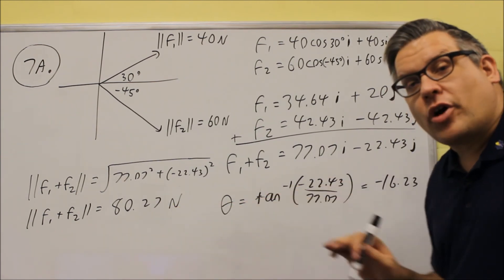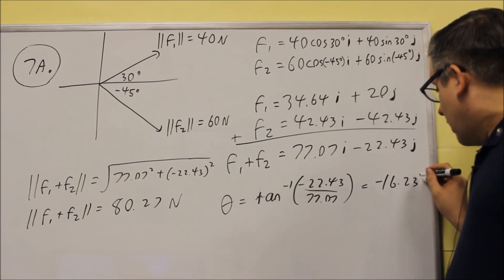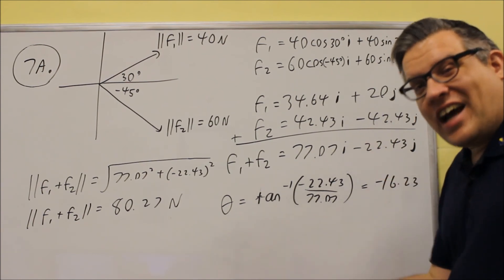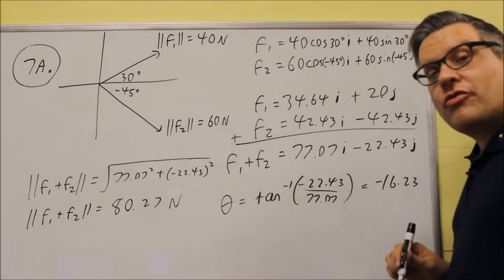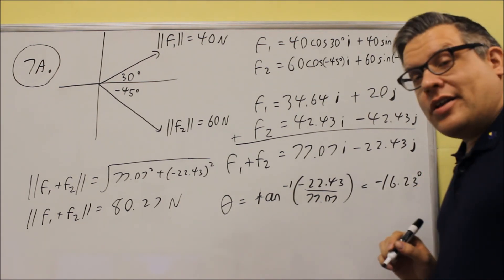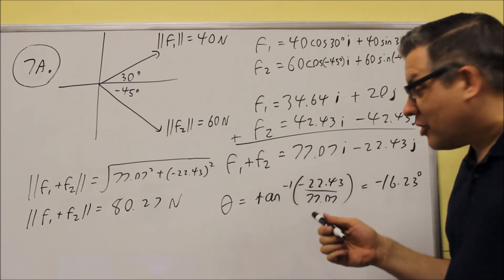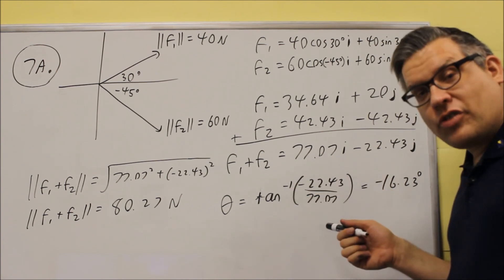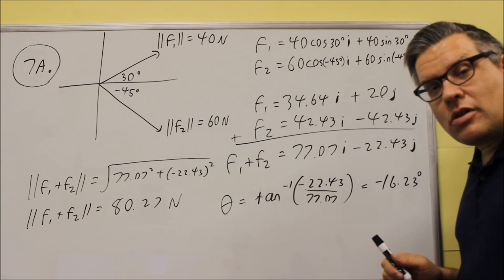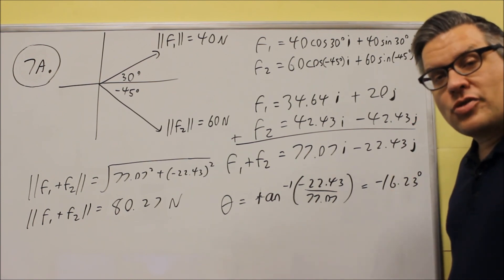So, magnitude is 80.27 newtons. And this, you don't have to do any more to that. You don't have to add 90, do anything else. That would be your final answer. That's your degrees. That's what you would put down for the direction. So, put that in the calculator. Make sure you put parentheses around the whole thing, so your calculator does the correct operation, but you should end up with this as a result.